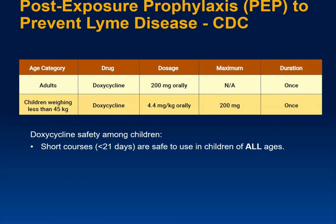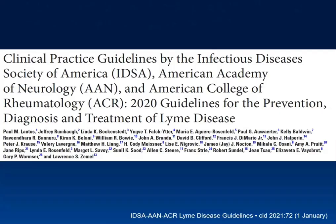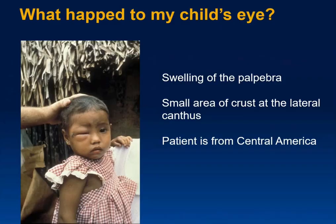There is a new 2020 guideline document from the Academy of Neurology, American College of Rheumatology, and IDSA covering Prevention, Diagnosis, and Treatment of Lyme Disease. For kids under 45 kg, the treatment dose is 4.4 mg/kg orally, maximum dose 200 mg, as a one-time dose. A short course of doxycycline is safe in all ages of children, just not during pregnancy.